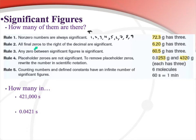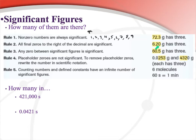Rule number two: all final zeros to the right of a decimal are significant. Rule one tells us everything except zeros counts. Rules two through four give more detail about what to do with zeros. For example, 6.20 — the 6 and the 2 count because of rule one. This zero is a final zero that ends the number and is to the right of a decimal, so according to rule two, it also counts. So 6.20 has three significant figures.